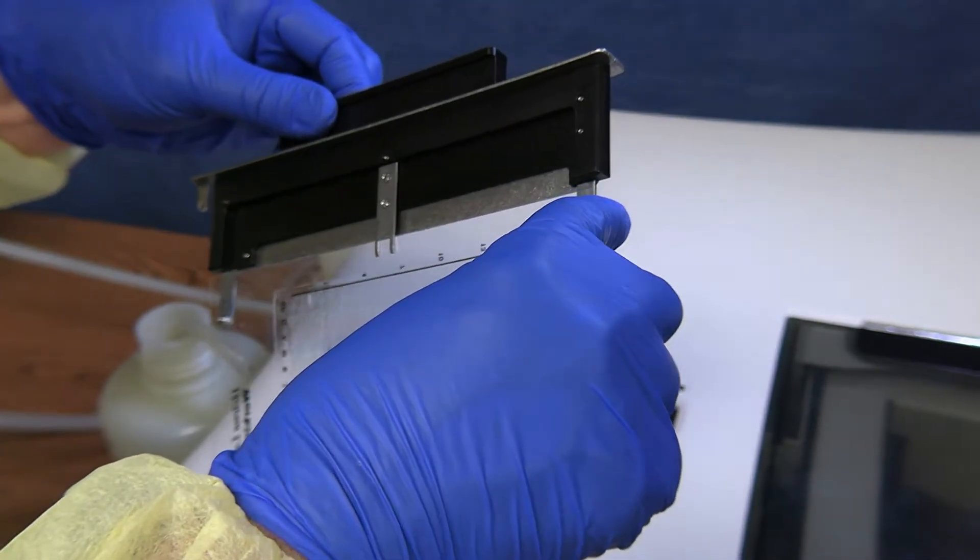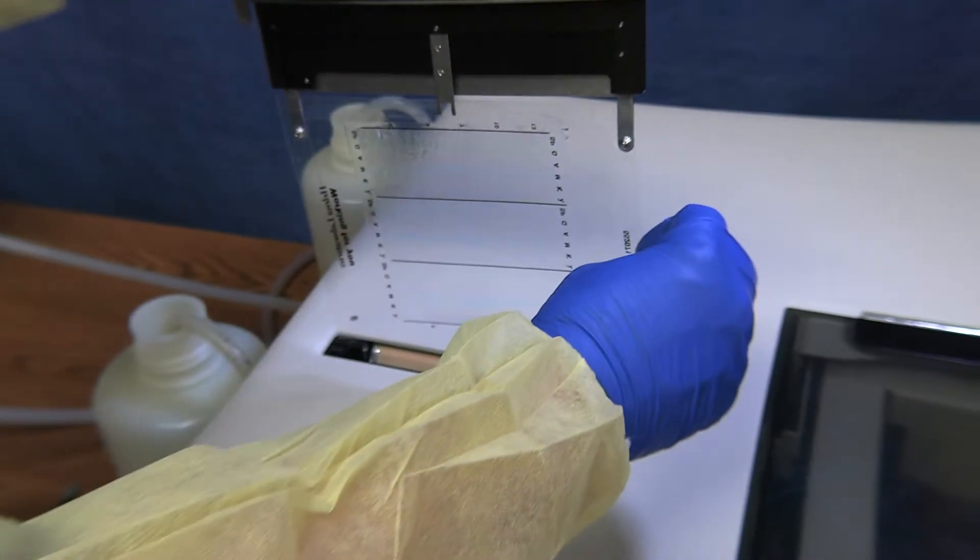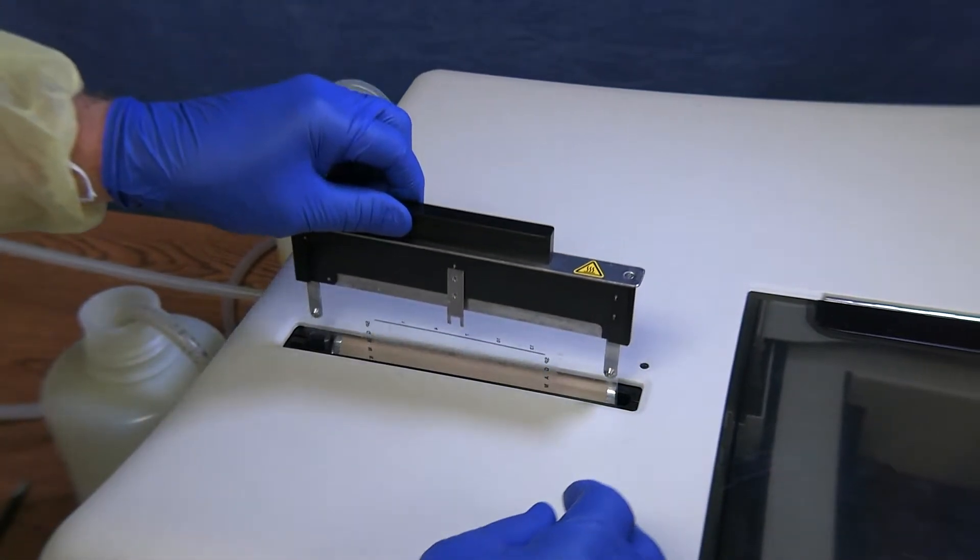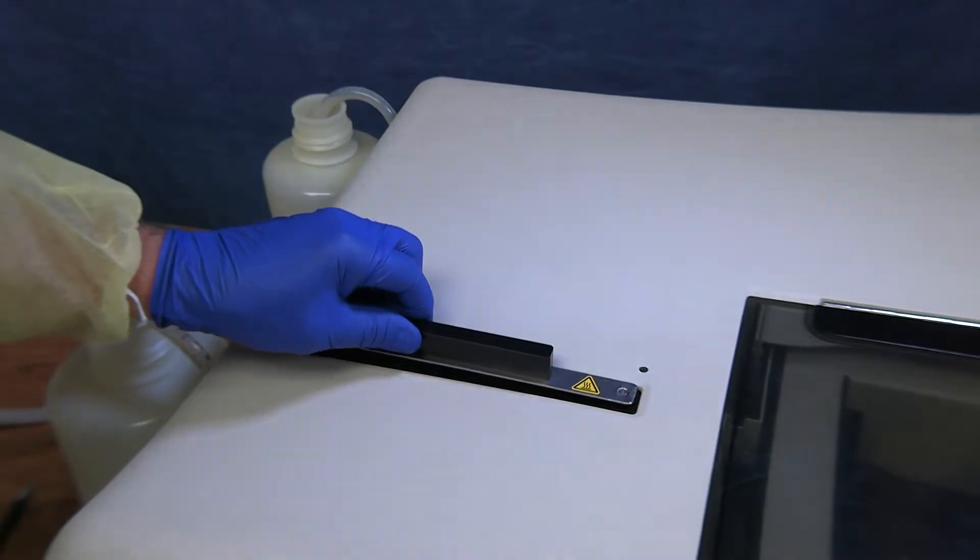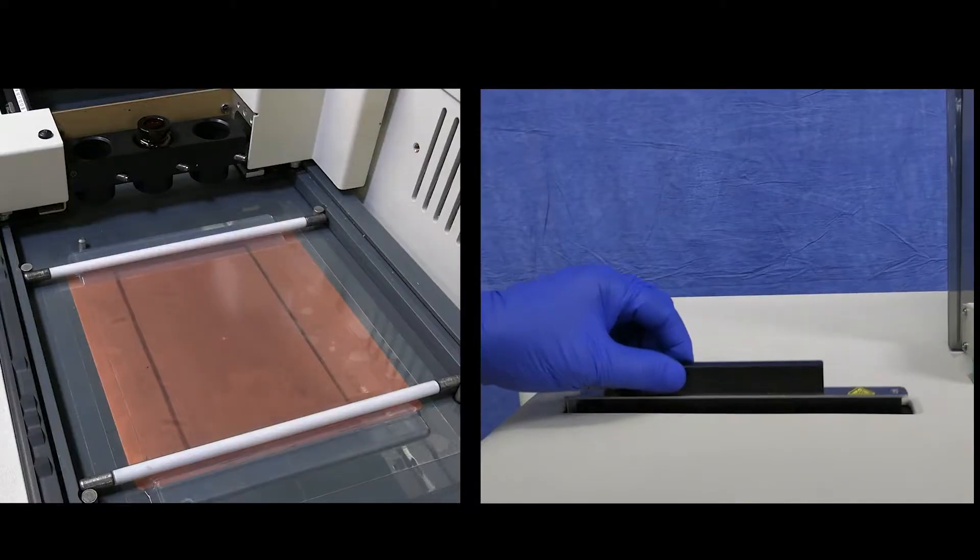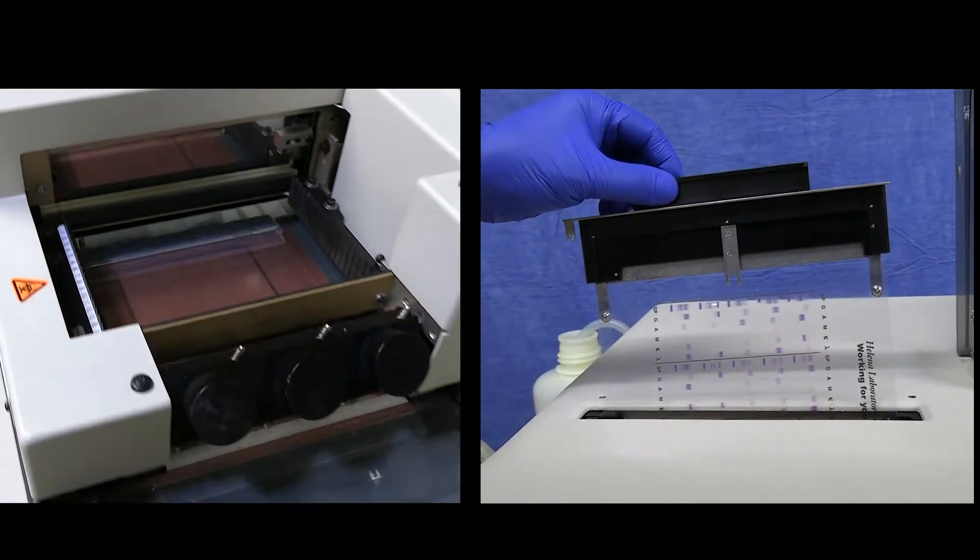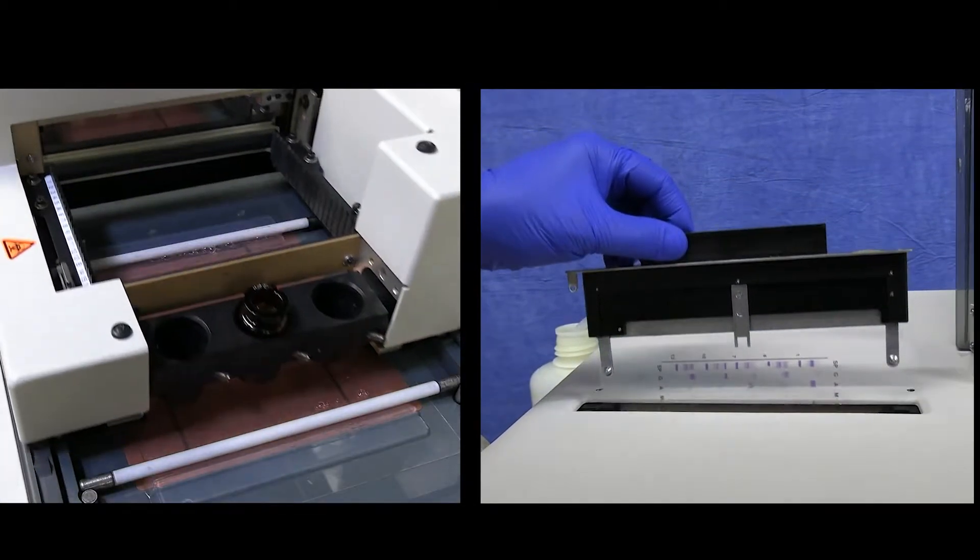For directly stained procedures, the operator transfers the gel to the left side of the instrument where all steps of washing, staining, destaining, and drying are automatically completed. That means one gel can be in electrophoresis at the same time a different gel type can be washing and staining.